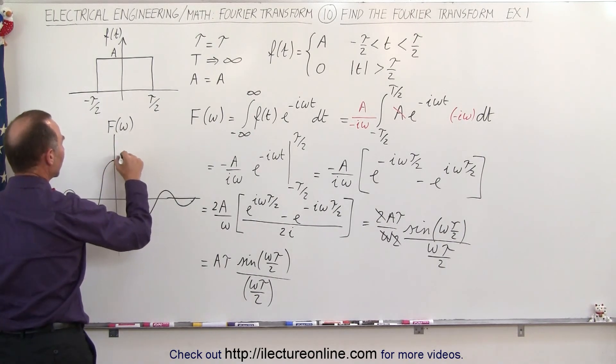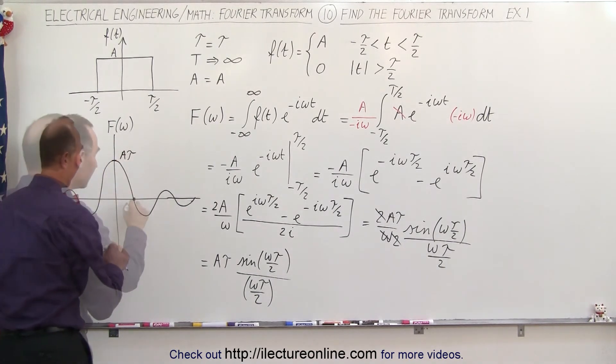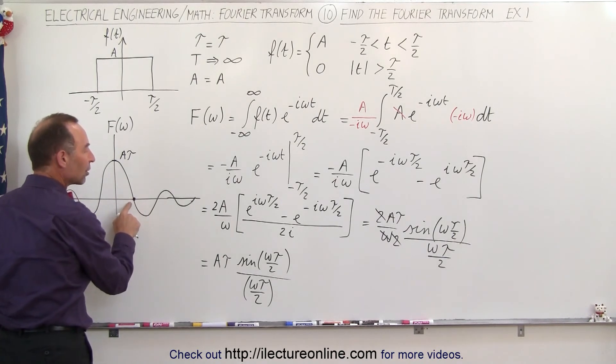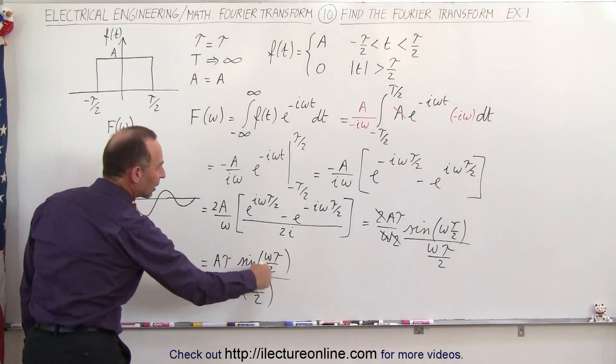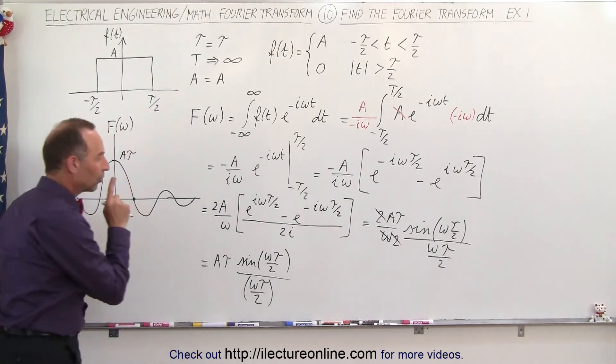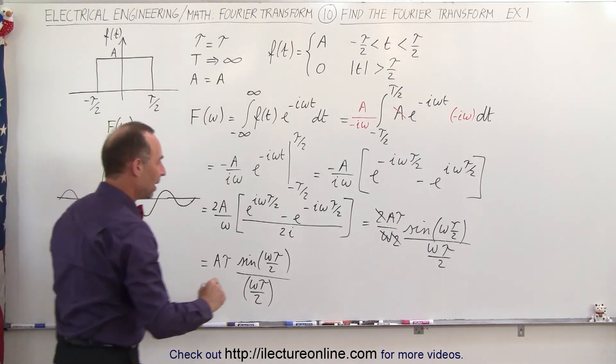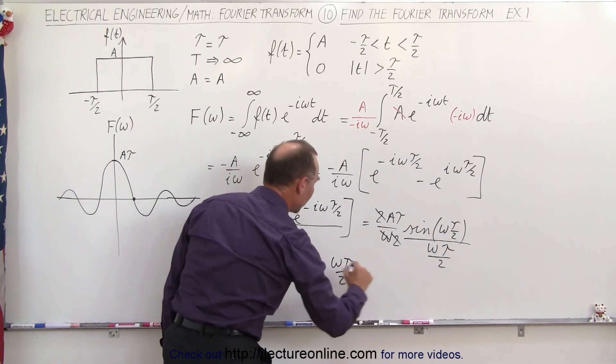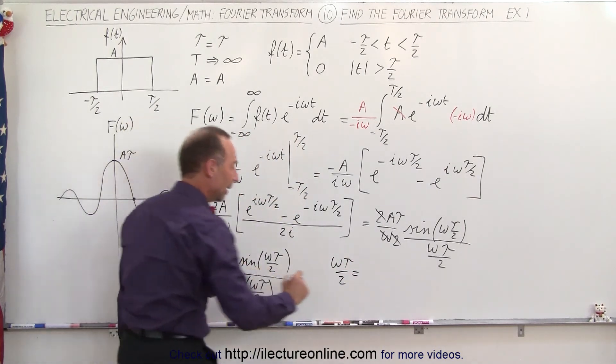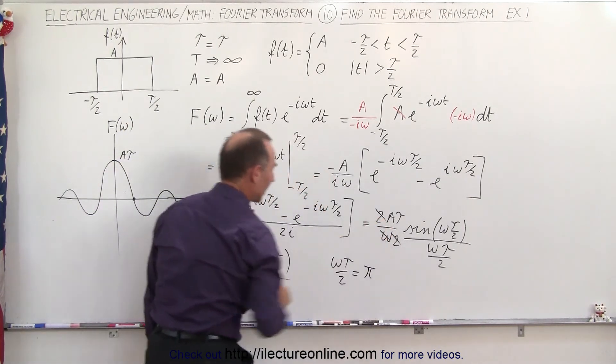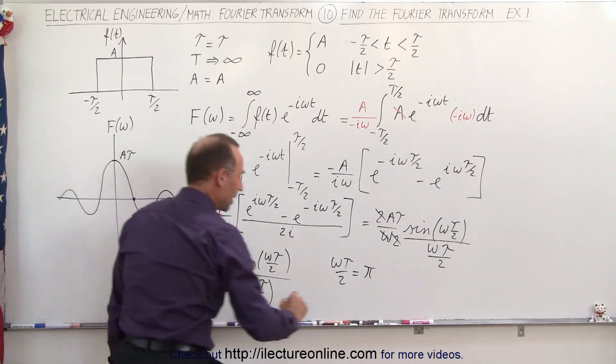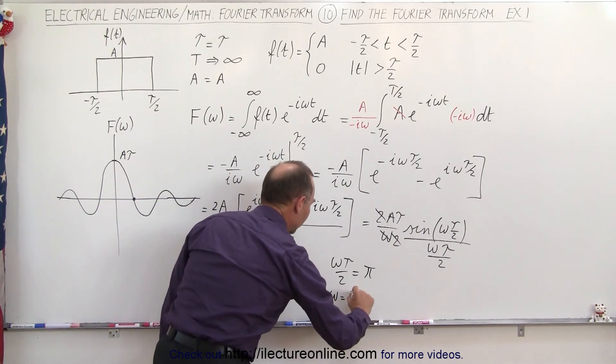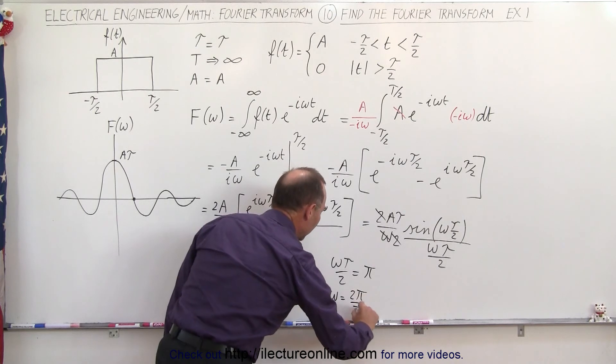The amplitude right here is the amplitude right there, which is A times tau. So the first position here is where the angle here, the sine of the angle, goes to zero. So that means that my angle omega tau over 2 must be equal to pi. If I now solve for omega, I can say that omega therefore is equal to 2 pi over tau.